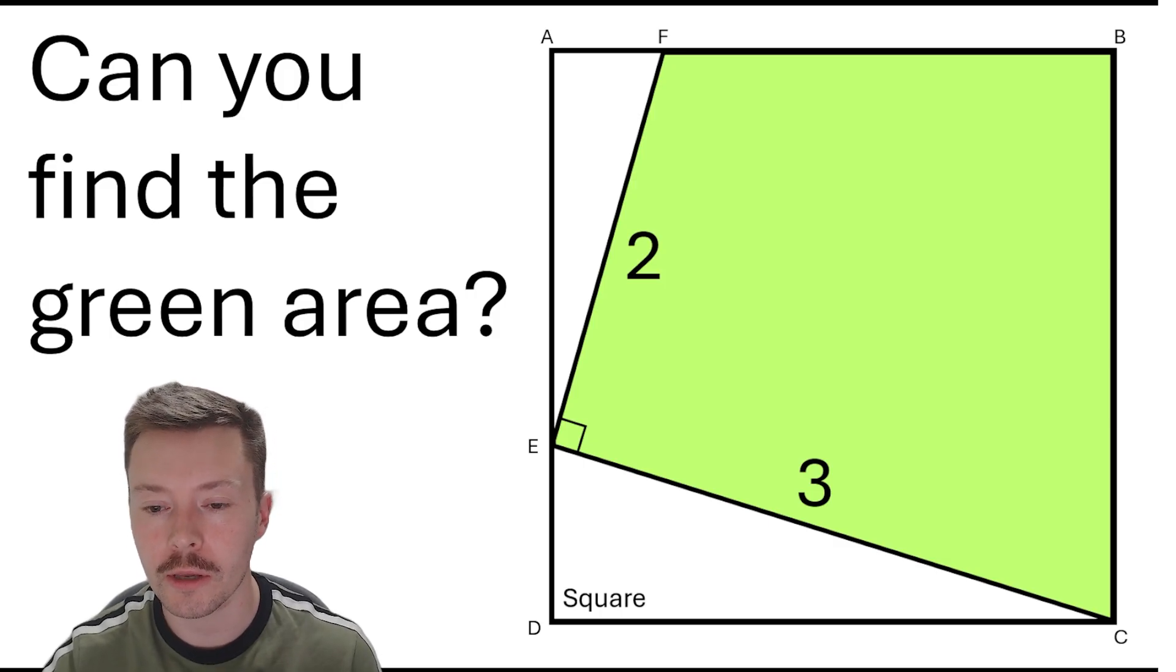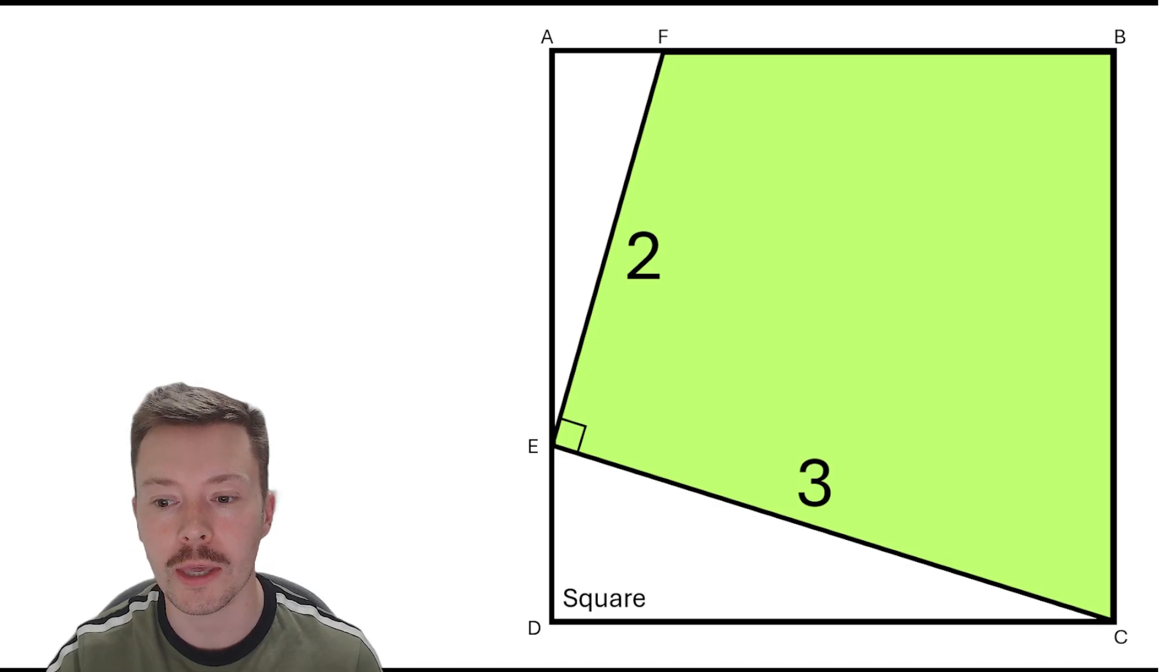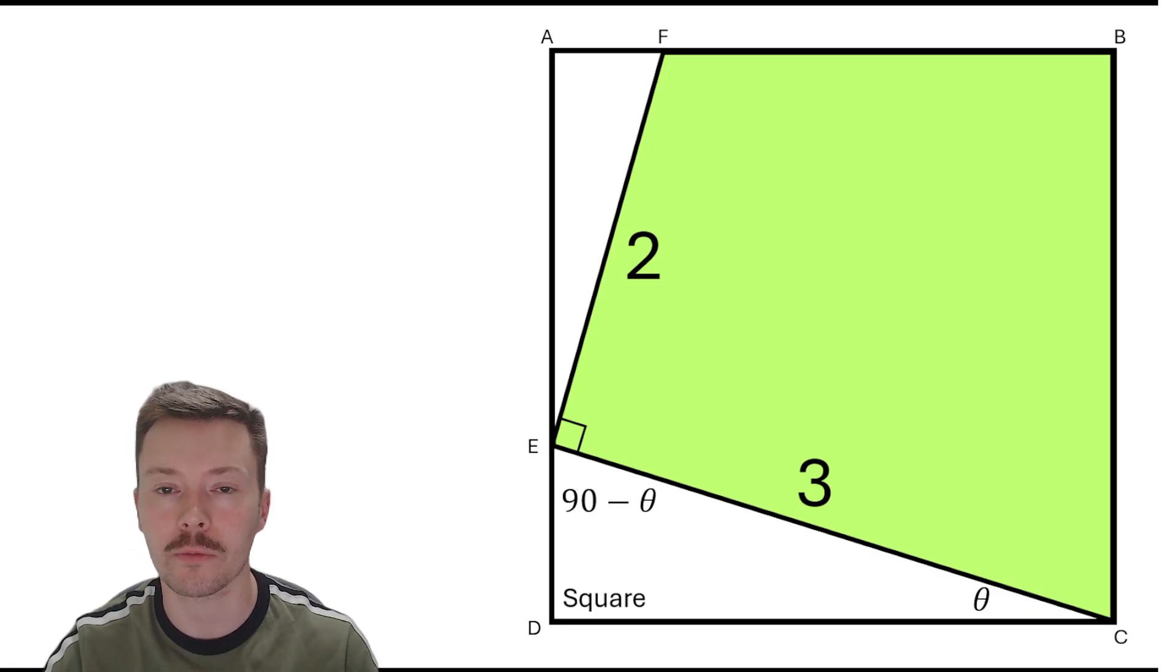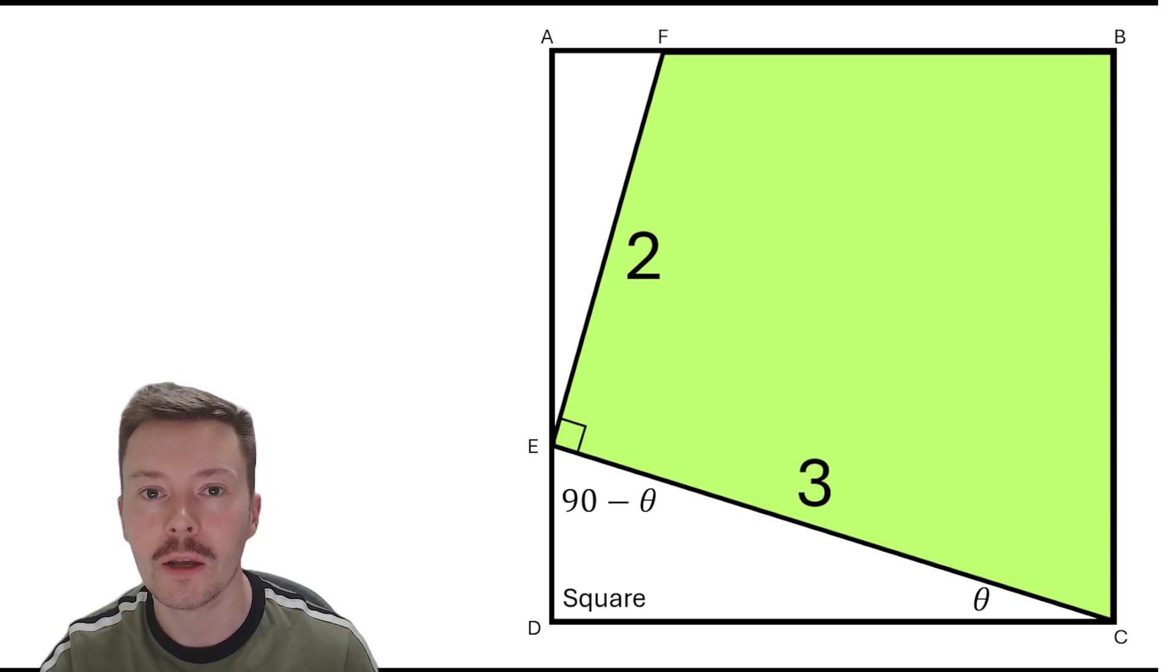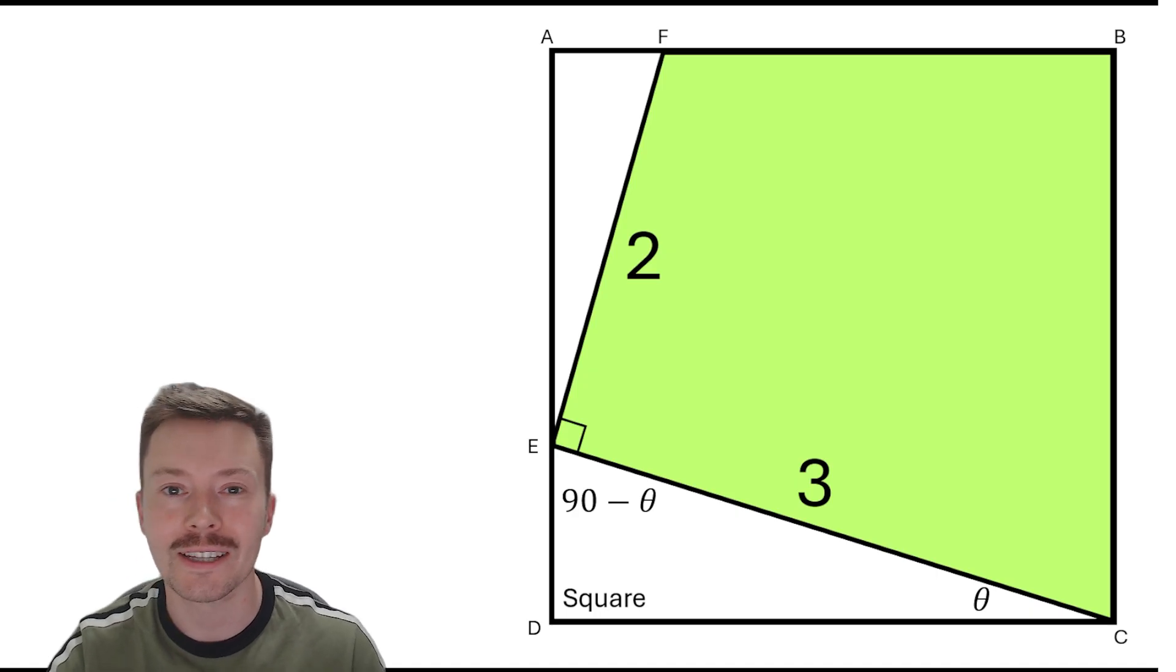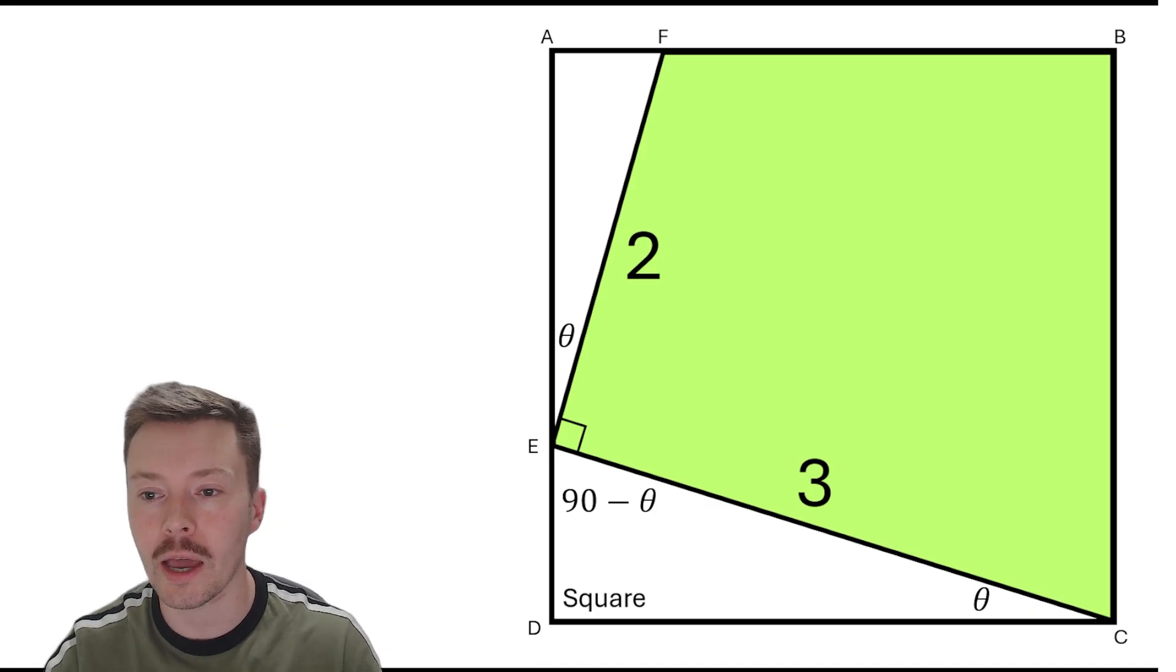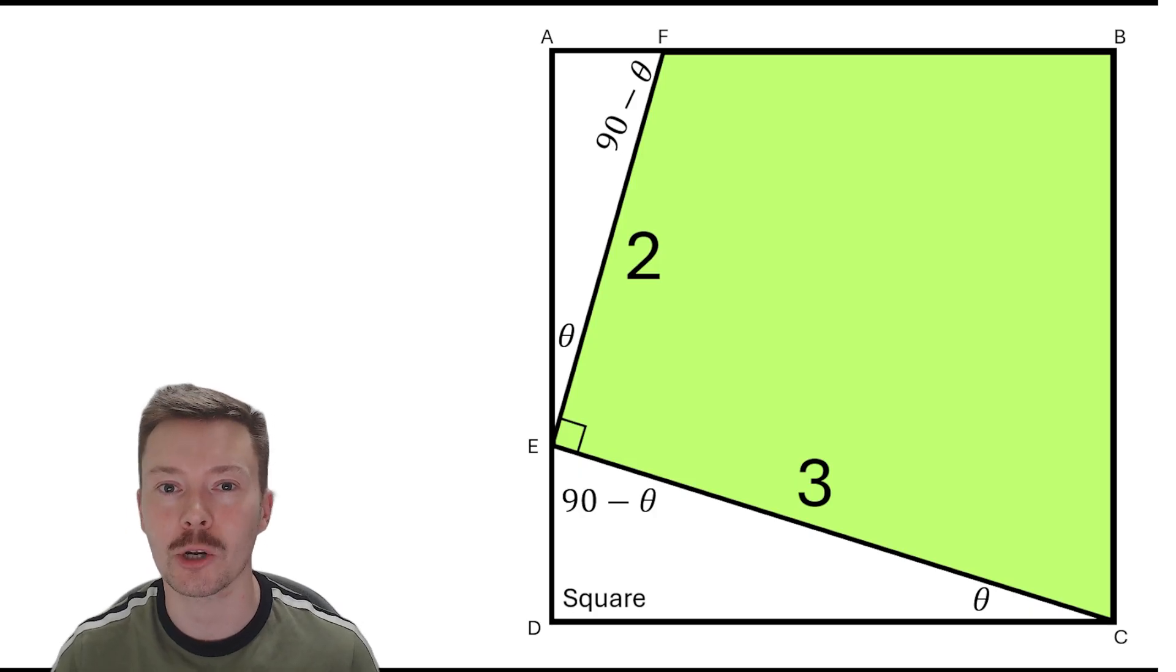Okay, so the first thing that I wanted to do here is I wanted to start labeling some of these angles. So I've labeled the angle ECD or DCE as theta. Now angles in a triangle add up to 180 degrees, so take away 90, take away theta, and we get left with the other angle which is 90 minus theta. Now angles on a straight line also add to 180 degrees, so take away 90 minus theta, take away the right angle, and we get left with theta again. Now the angle EFA is also going to be 90 minus theta by the same logic, because again there's 180 degrees in a triangle, subtract the 90, subtract the theta.